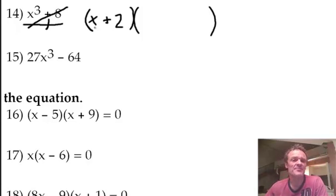Right, what you do is this. If that's an x, you need an x squared to make the x cubed. I've got one x, I need another x squared to make the x cubed. If I've got the two, I need a four to make the eight.